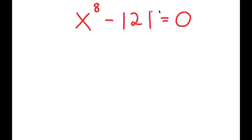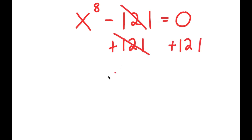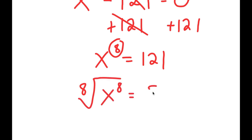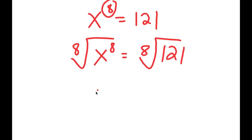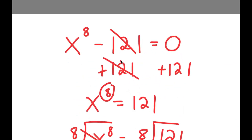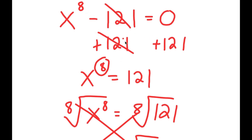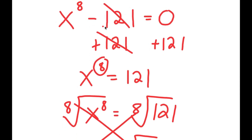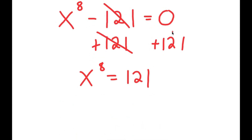Now, what most people would think to do to solve this equation is add 121 on both sides, so then you'd get x to the power of 8 equals 121. And then, since x is to the power of 8, take the 8th root on both sides to get the 8th root of 121. But this method is actually wrong because there are actually many more solutions than just 2 to this equation.